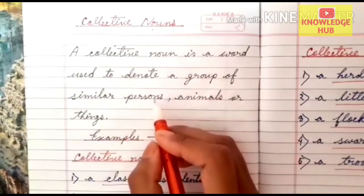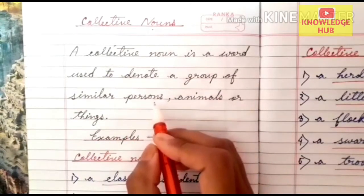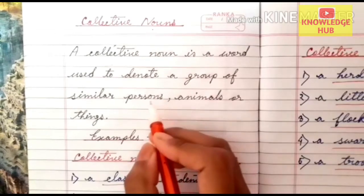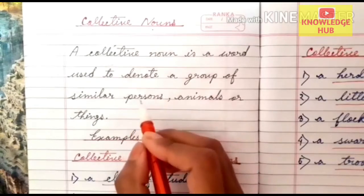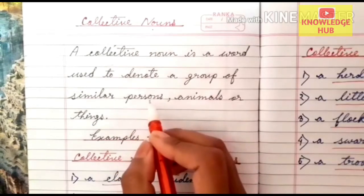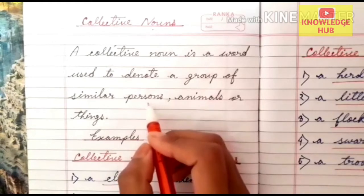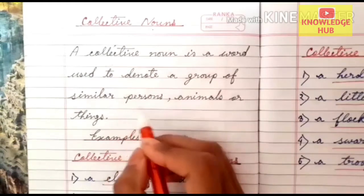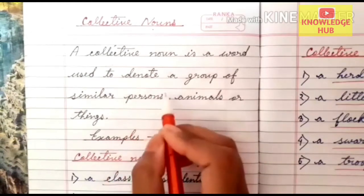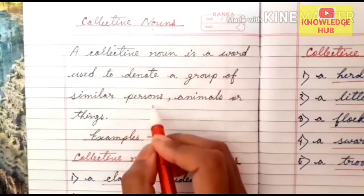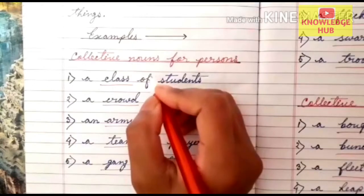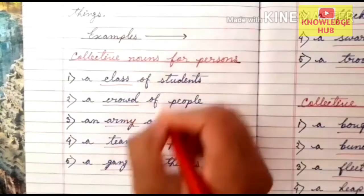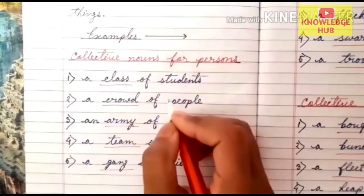So collective noun — a word that represents a group or collection. It may be a group of persons, or it may be a group of animals or things. So to understand more, let's look at the examples here.